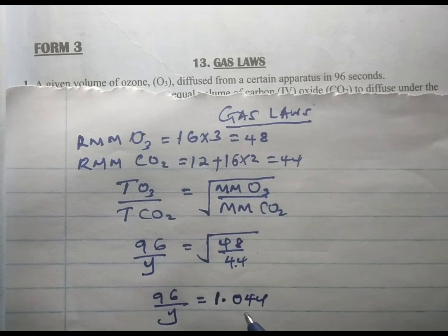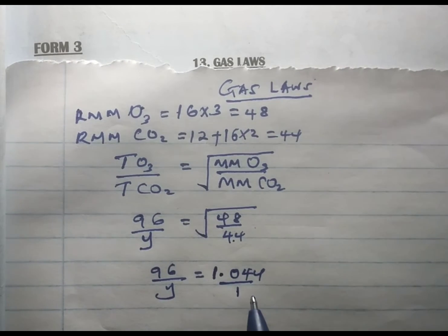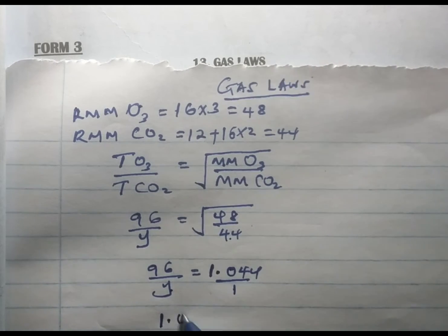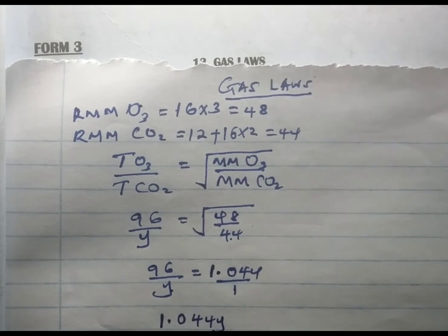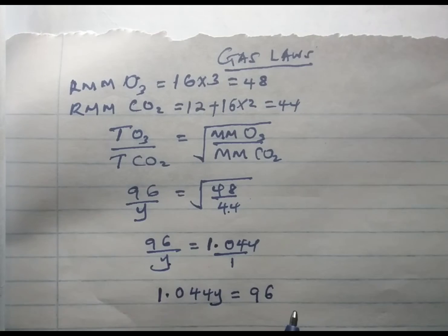We rationalize 1.044 as a fraction by putting it over 1. Then we cross multiply. We are going to have y multiplied by 1.044 giving us 1.044y being equal to 1 times 96 which is 96. You divide both sides.